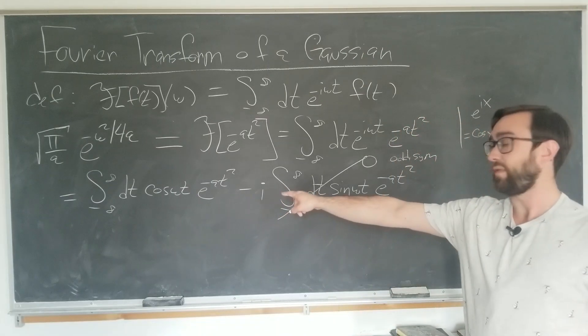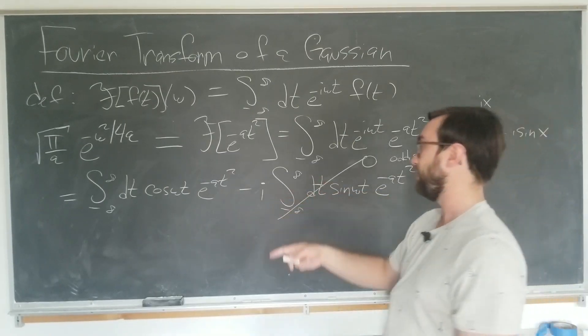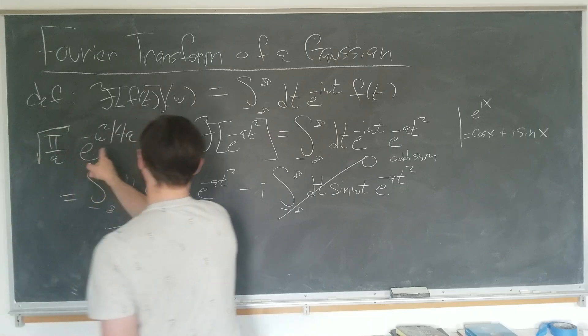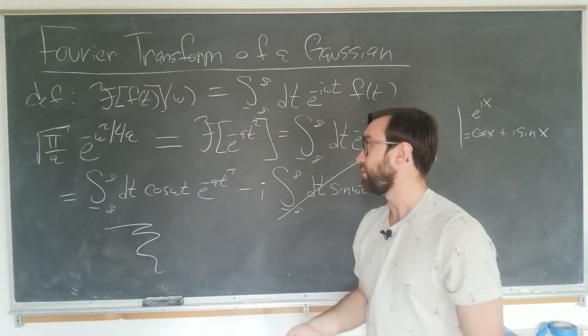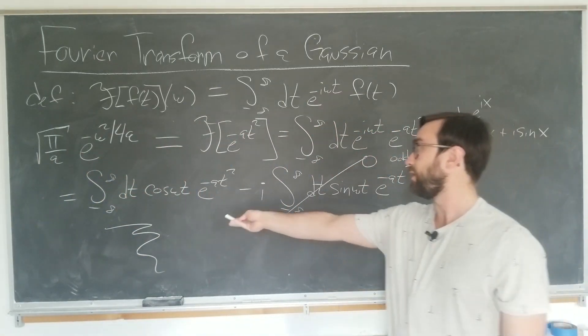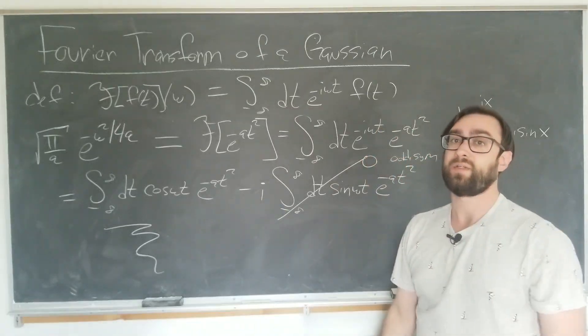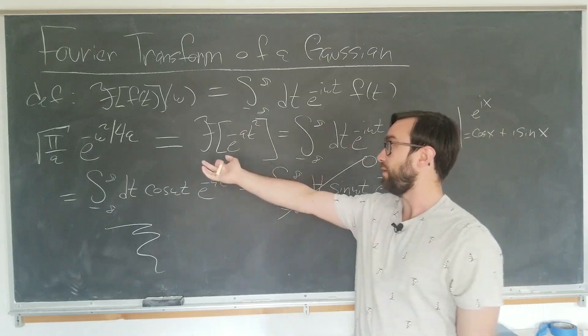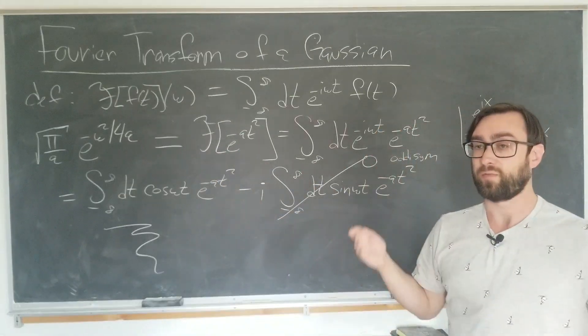So this immediately tells us that the result of this integral is equal to this constant up here. So if you see a product of a cosine and a Gaussian, you can immediately reference this result on the Fourier transform to evaluate it as such. No tricks are required.